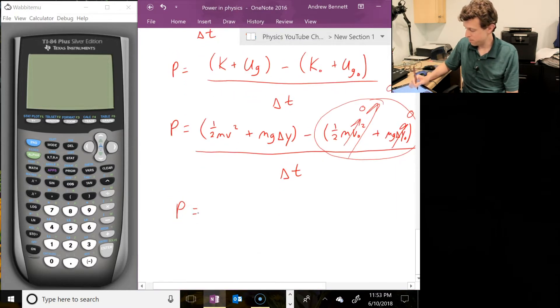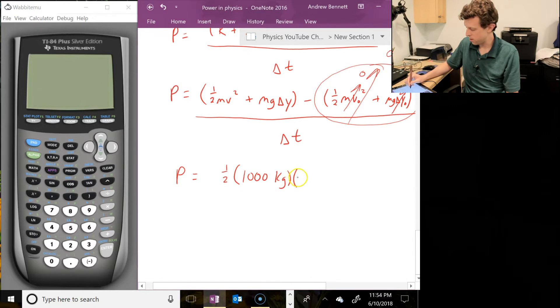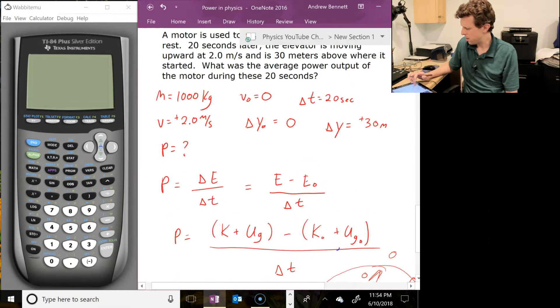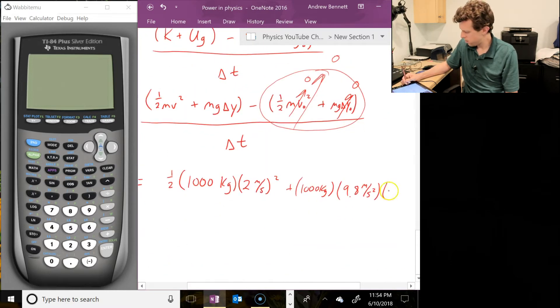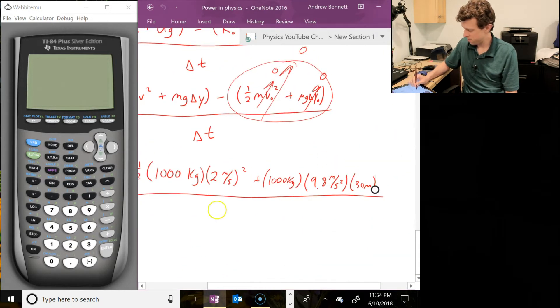So then power. And that's going to be equal to, we've got one-half times the mass, that was a thousand kilograms, times the final speed, which we had listed as two meters per second squared, plus, and then we've got a thousand kilograms, times 9.8 meters per second squared, times, what was that final height? 30 meters. And that's all divided by our time, which was 20 seconds.